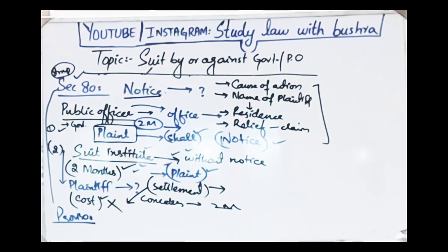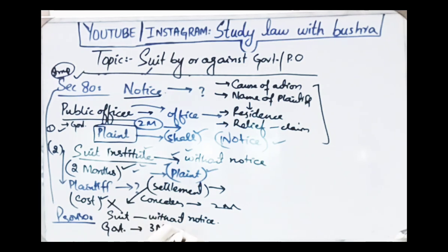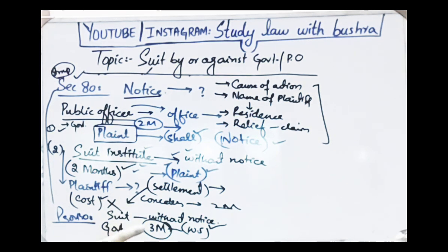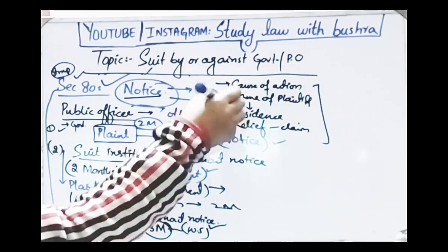There is a proviso attached to this section: that in a suit instituted without such notice, the court shall allow not less than three months to the government to submit its written statement. So when you file a suit against the government without giving notice two months before, the court will give that government three months to submit its written statement — because the two months' notice was mandatory; since you didn't give notice, the court grants the government three months to file its written statement.